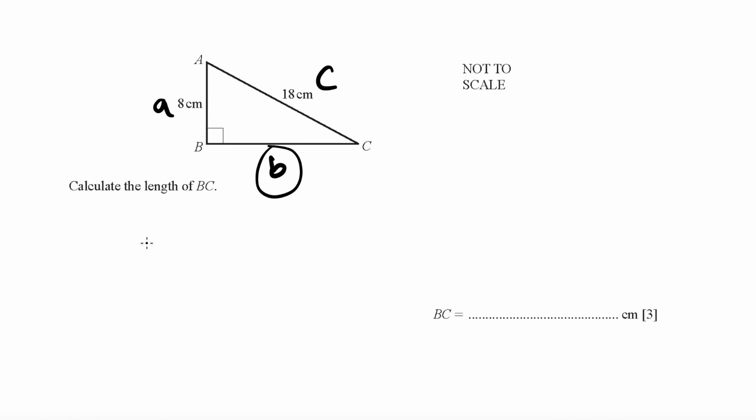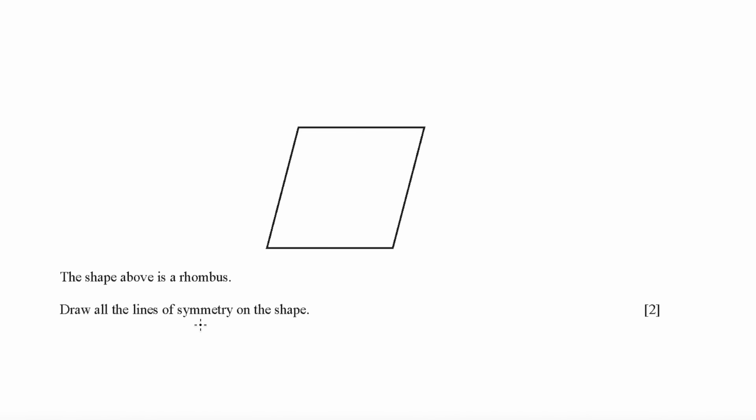For Pythagoras theorem, each side can be labeled by a, b, and c. If you want to find the value of b, you need to know this formula: a squared plus b squared equals c squared. a squared here is 8 squared plus b squared; we need to find out c squared, which is 18 squared. To rearrange, you get 18 squared minus 8 squared, and if you root this, you can get the value of b. This is Pythagoras theorem.